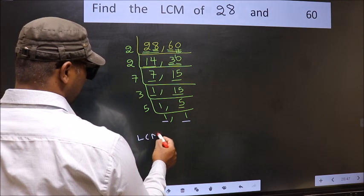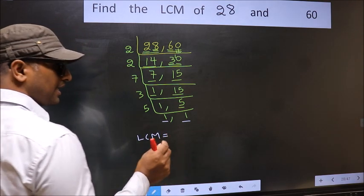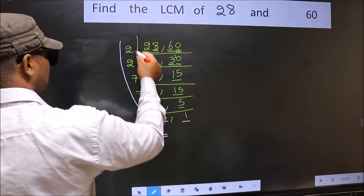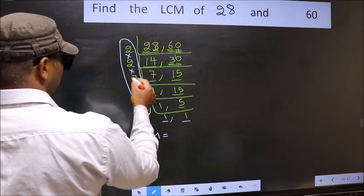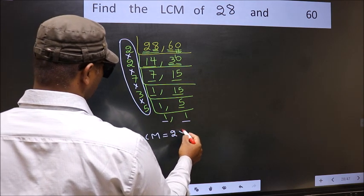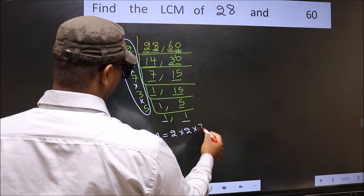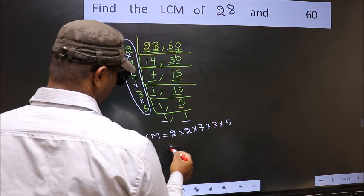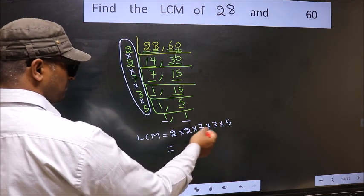So our LCM is, LCM is the product of these numbers. That is 2×2×7×3×5. When we multiply these numbers, we get 420 is our LCM.